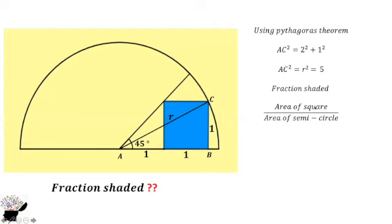The area of the square is 1². The area of the semicircle is π/2 times r². And we already know r² to be 5.